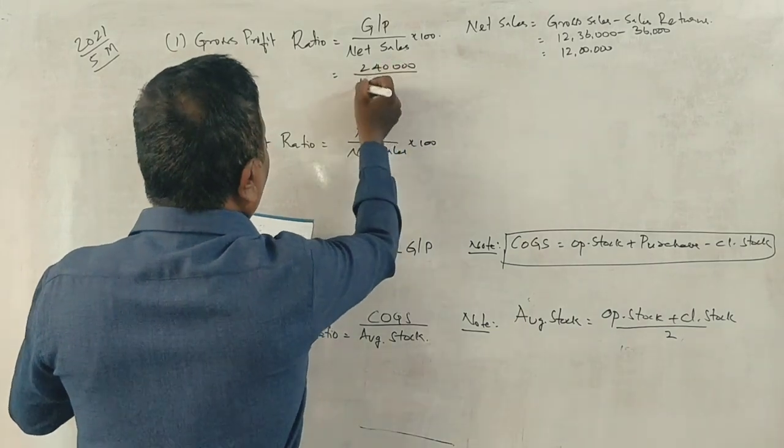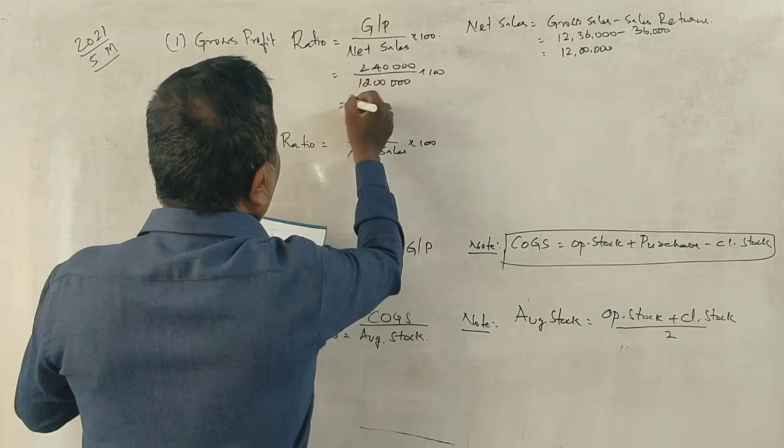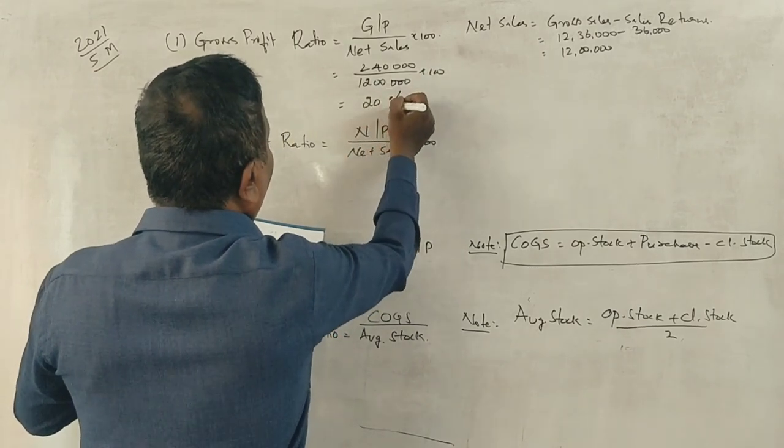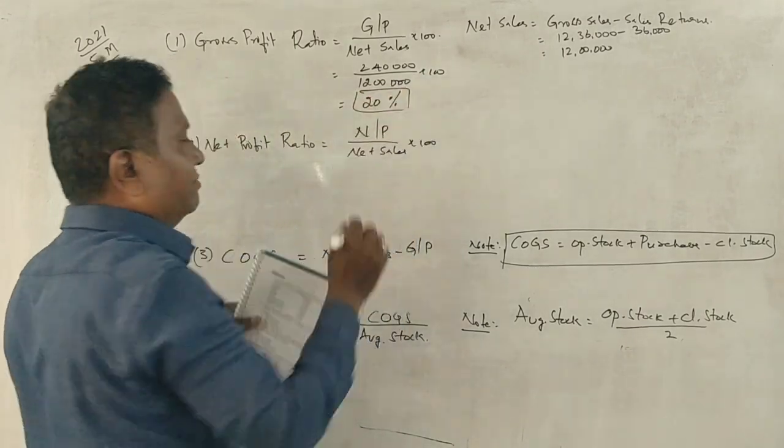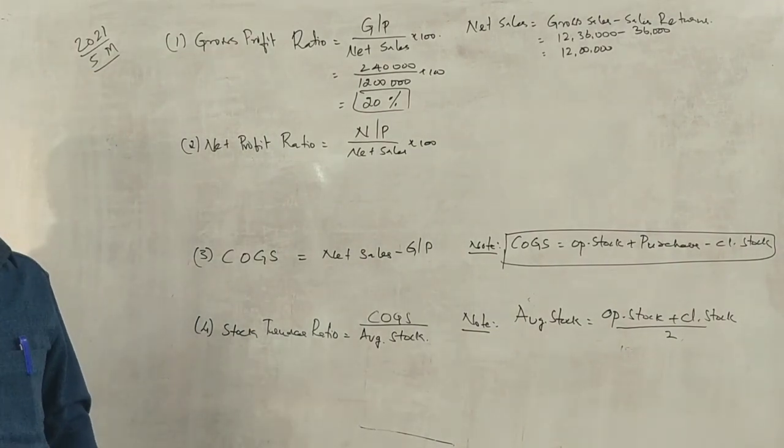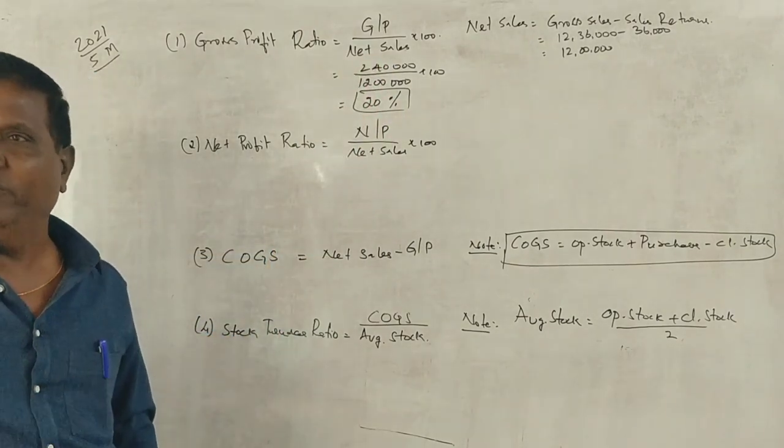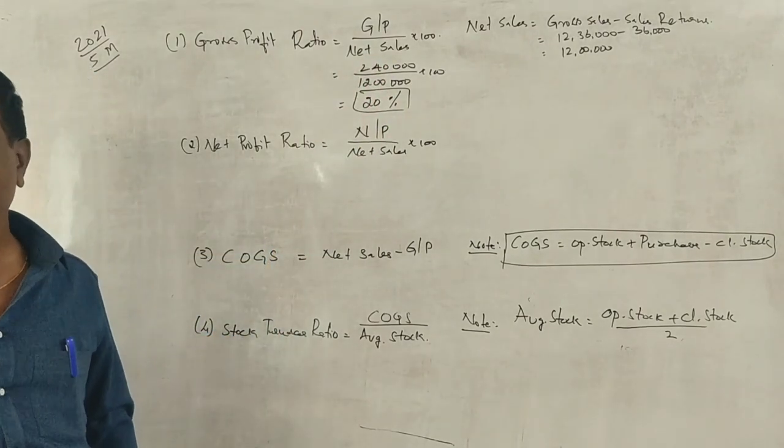Gross Profit Ratio: Gross Profit is 2,40,000 divided by Net Sales 12,00,000, into 100. That gives us 20%. Correct?